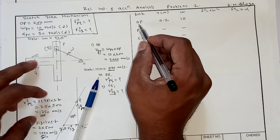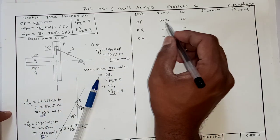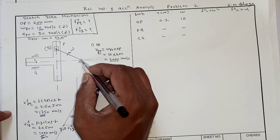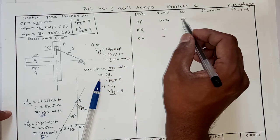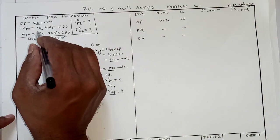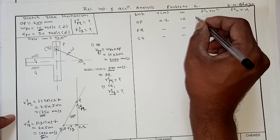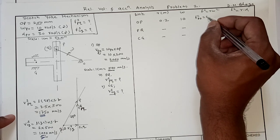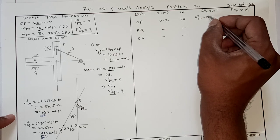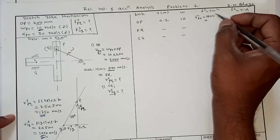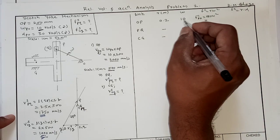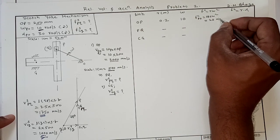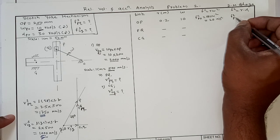To draw the acceleration polygon we first prepare a table. The first link is crank OP, whose length — the radius of rotation of P relative to O — is 0.2 meters. Angular velocity is 10 radians per second clockwise. Centripetal acceleration of P relative to O equals OP × ω² = 0.2 × 10² = 20 meters per second squared.